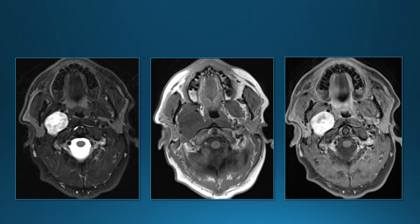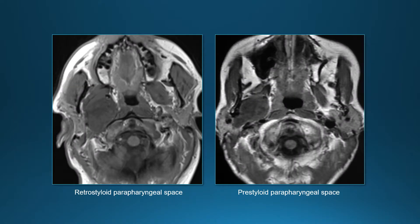Going back to our case: this is a retrostyloid parapharyngeal mass that turned out to be a schwannoma. To distinguish a retrostyloid from a pre-styloid parapharyngeal mass: you might think the easiest way is to see if the lesion is in front of or behind the styloid process, and that works if the lesion is very small. But when the lesion is big, even if it started behind the styloid process it's going to extend in front of it, so that generally doesn't work.